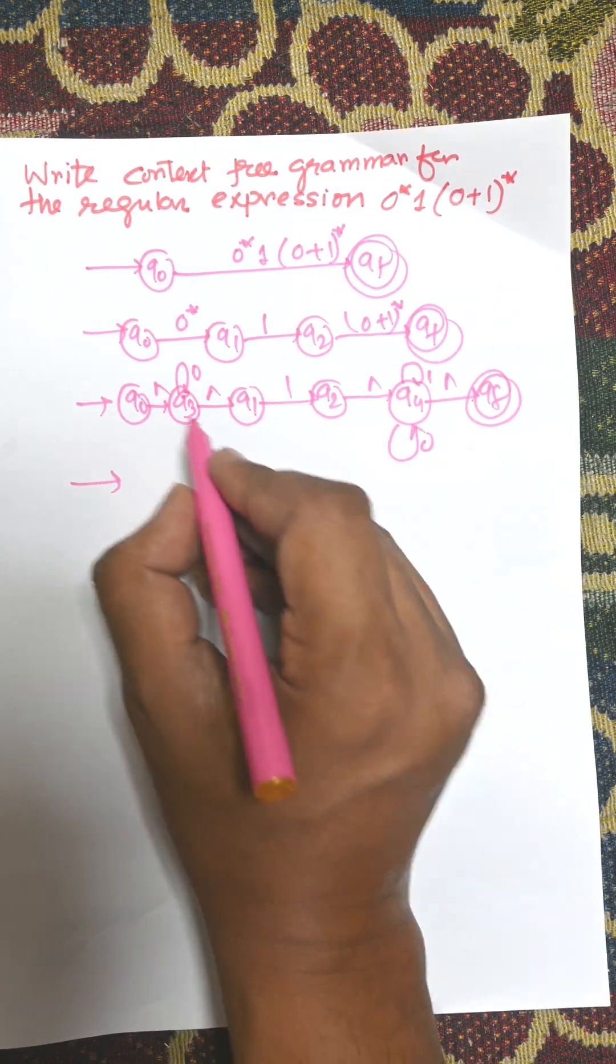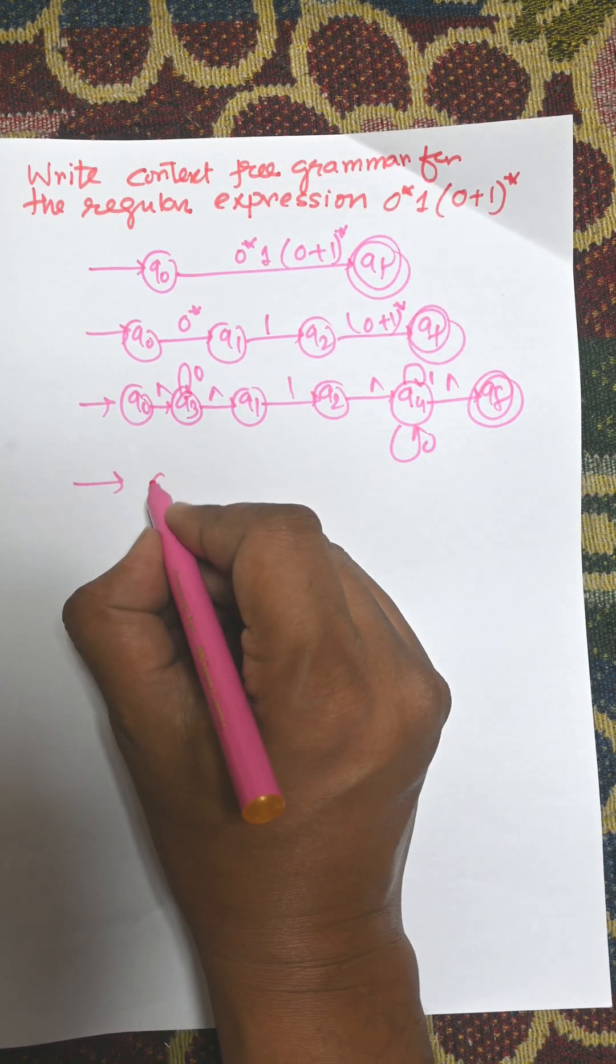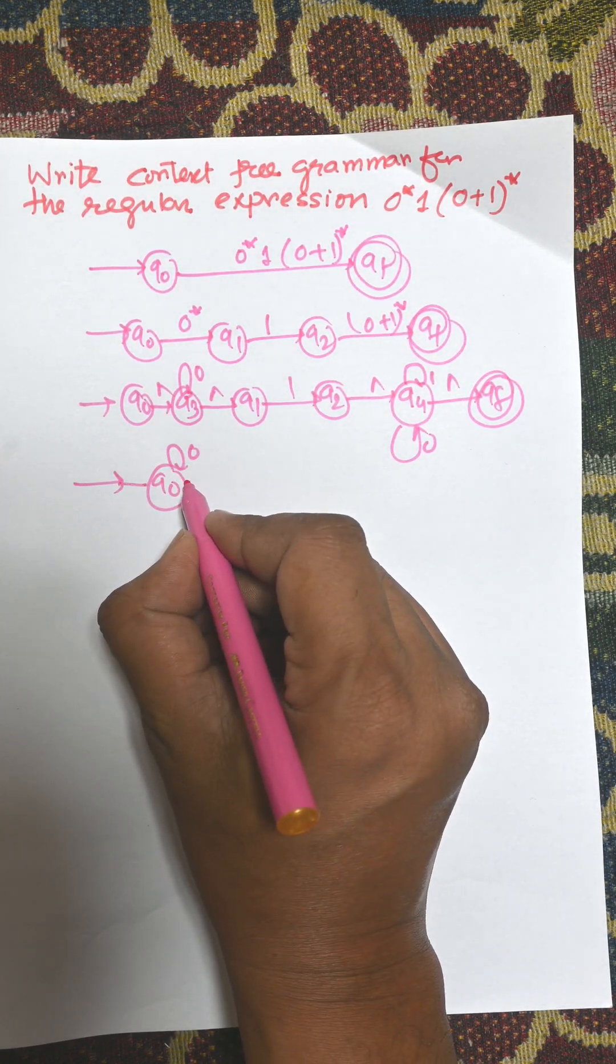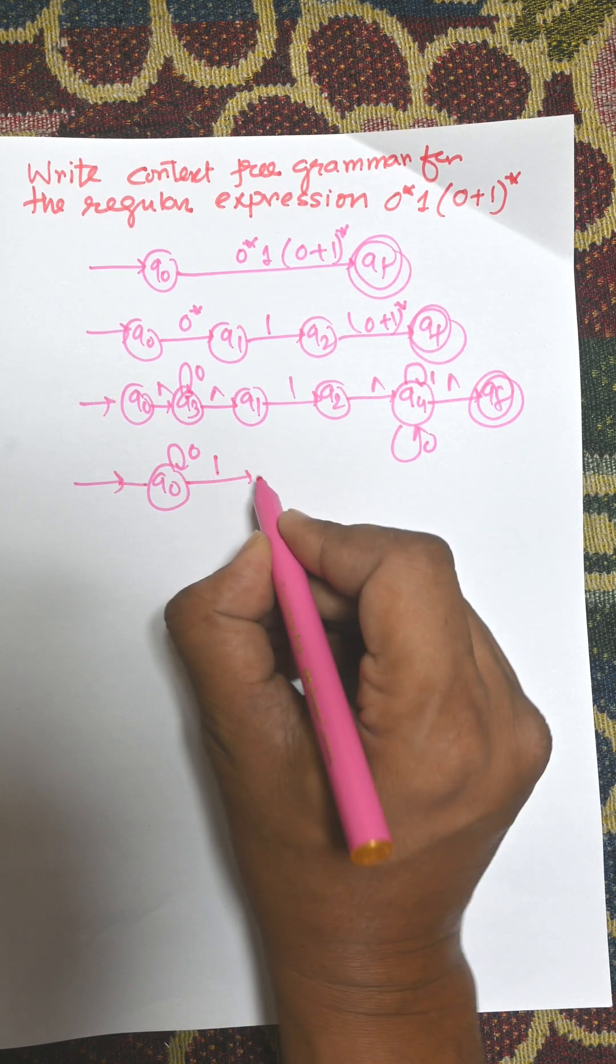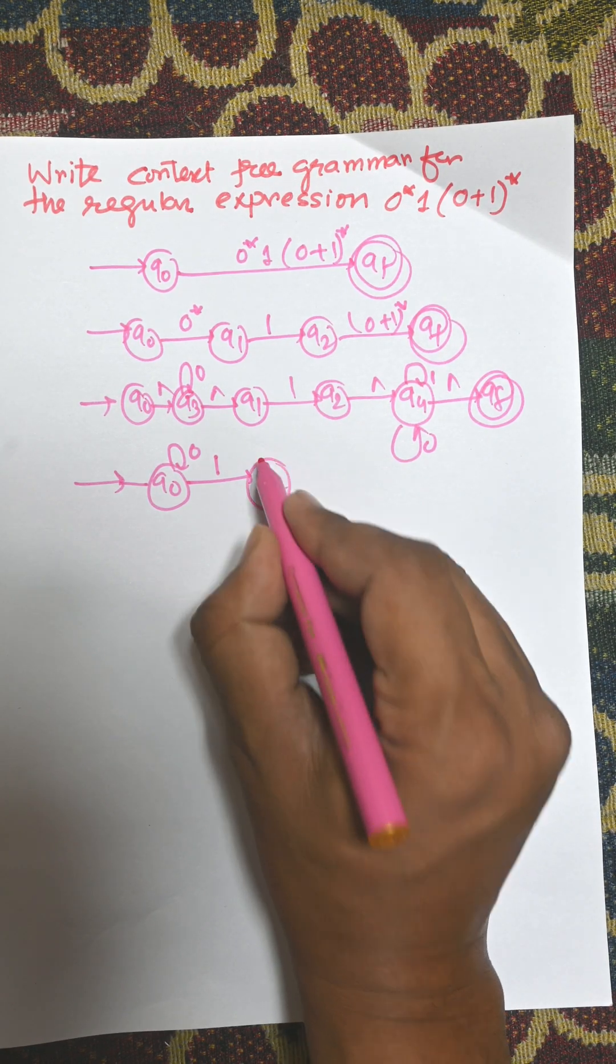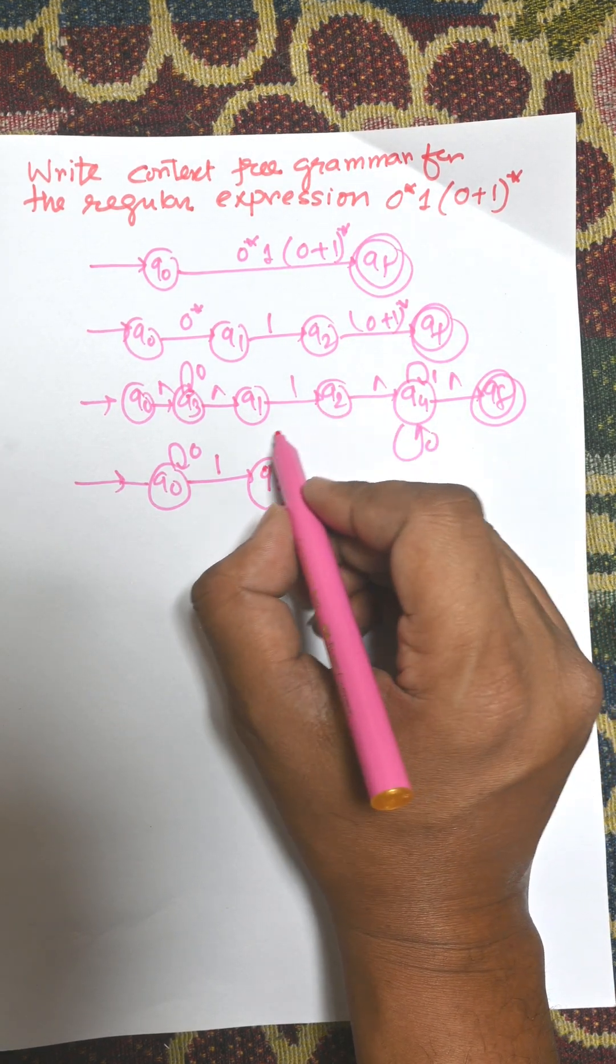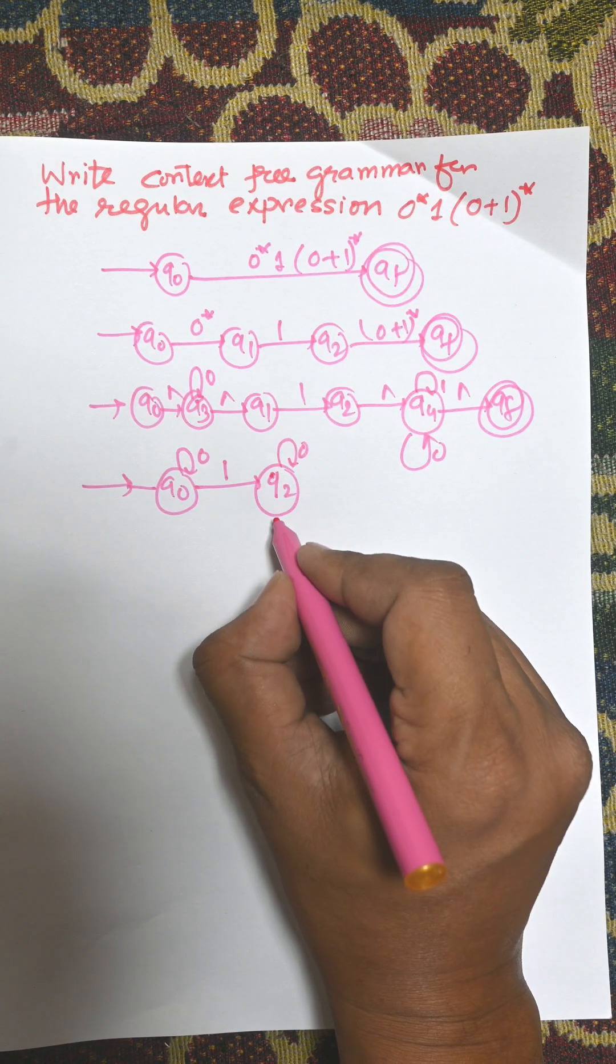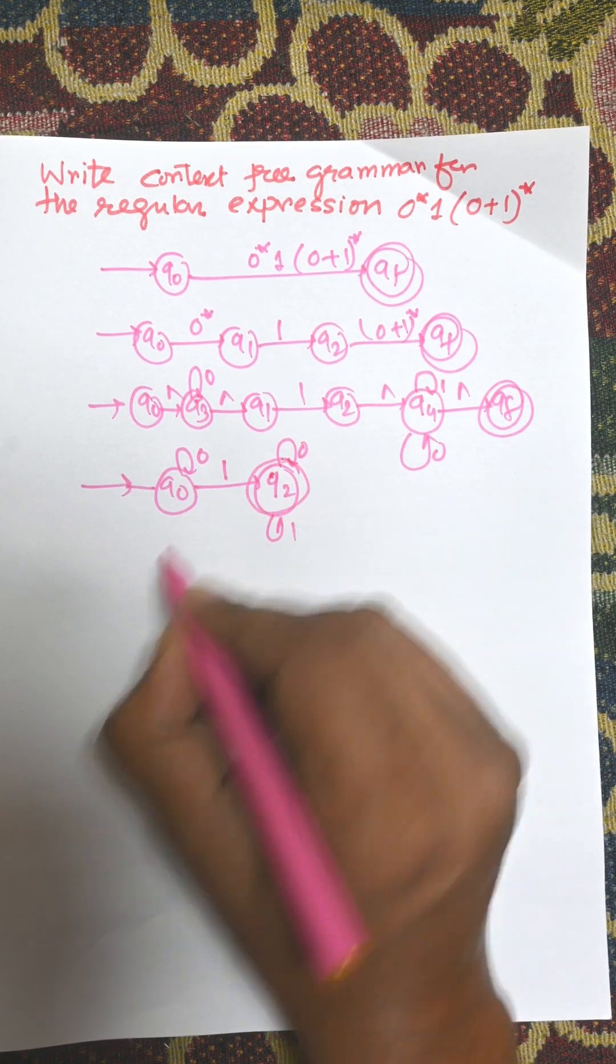Now we need to remove all the empty symbols. That means when you delete, then Q0 will be the initial state. Q0 will be initial for Q0 to 1, that is consider this as Q1 or you can consider it as Q2. And if you want to delete this empty symbol, then this will be the final state.